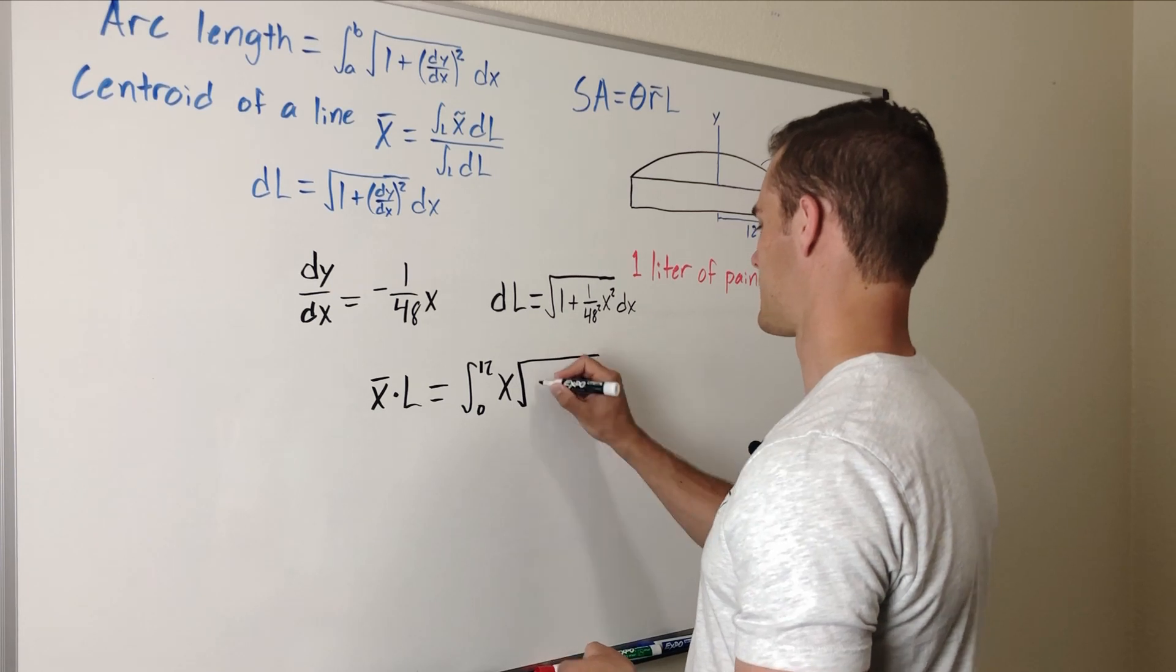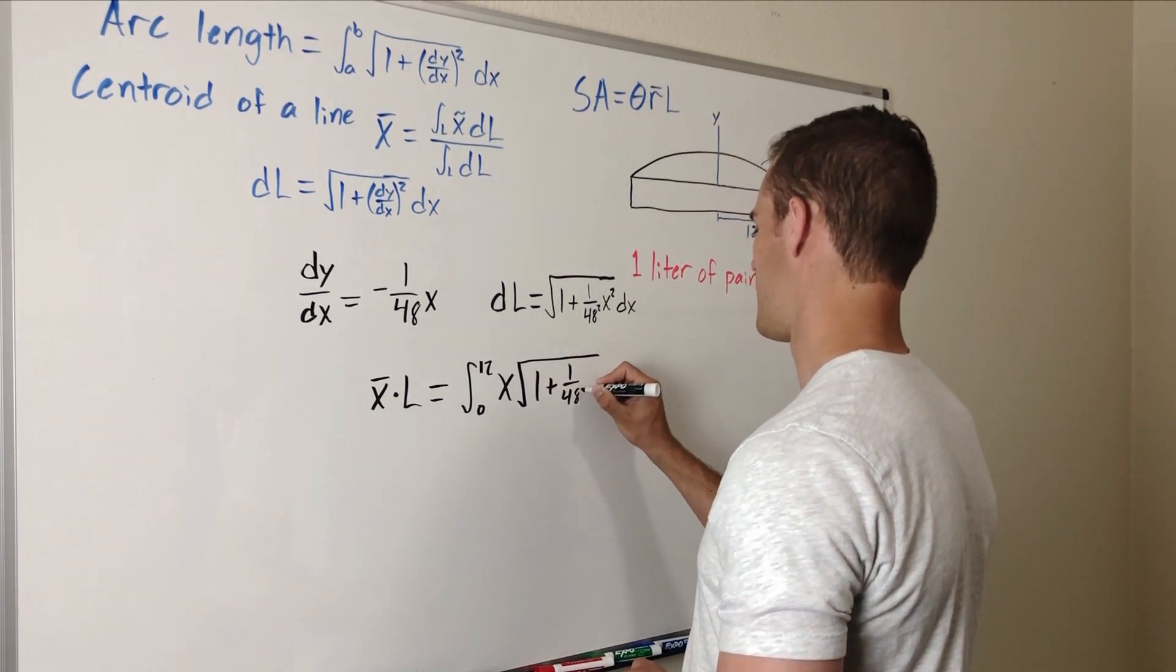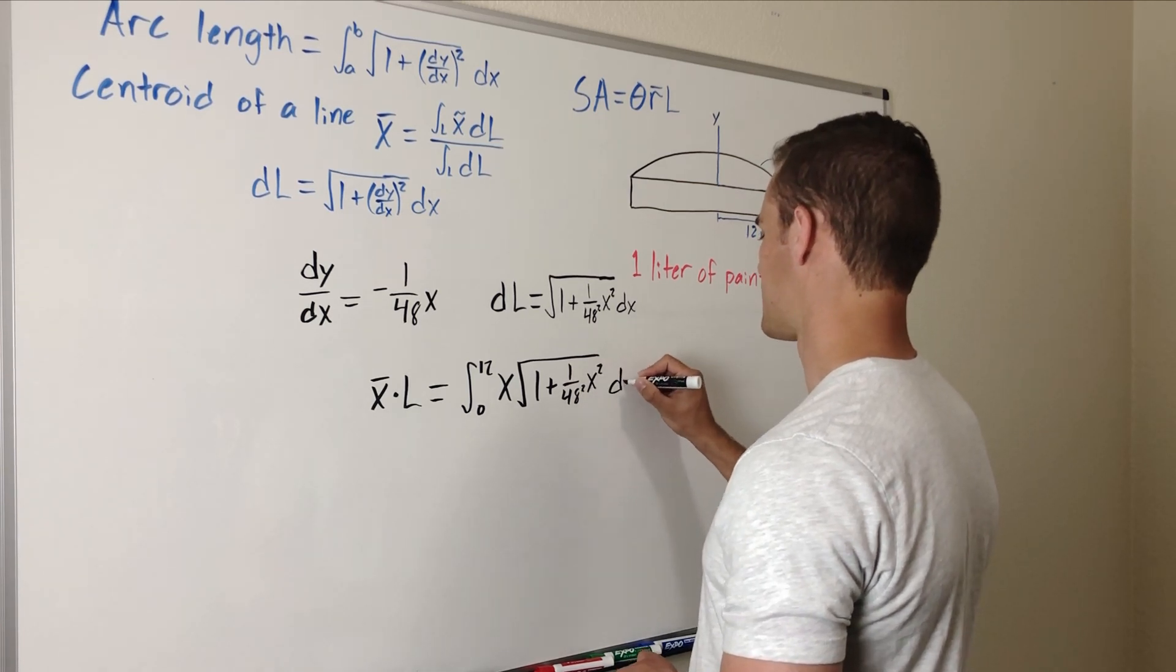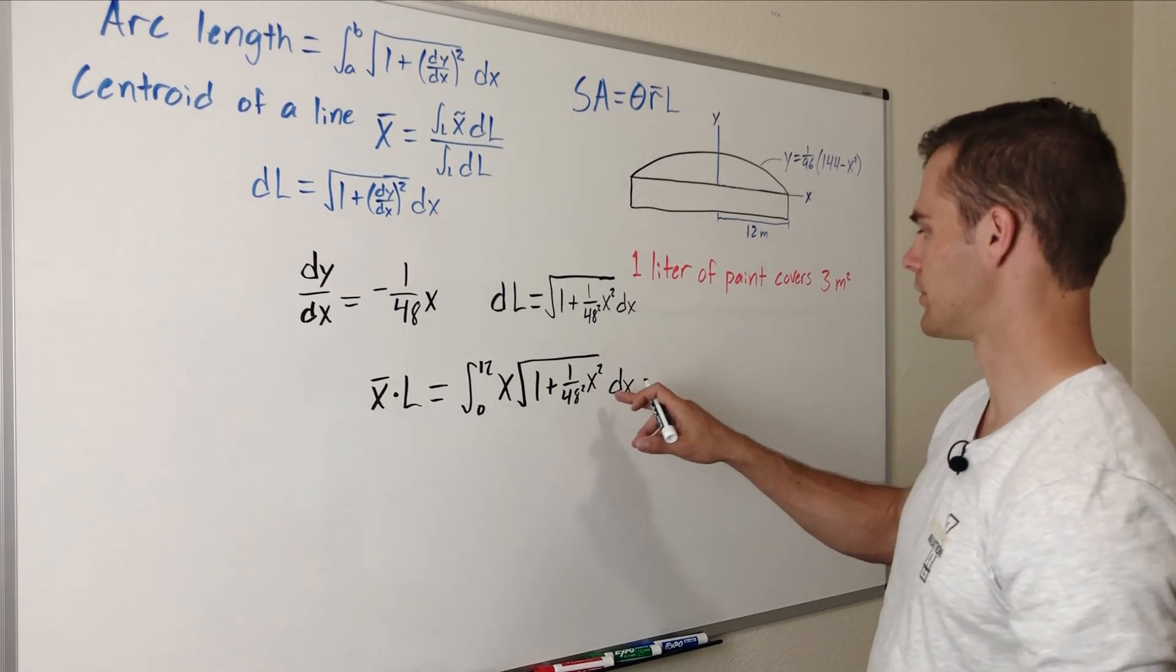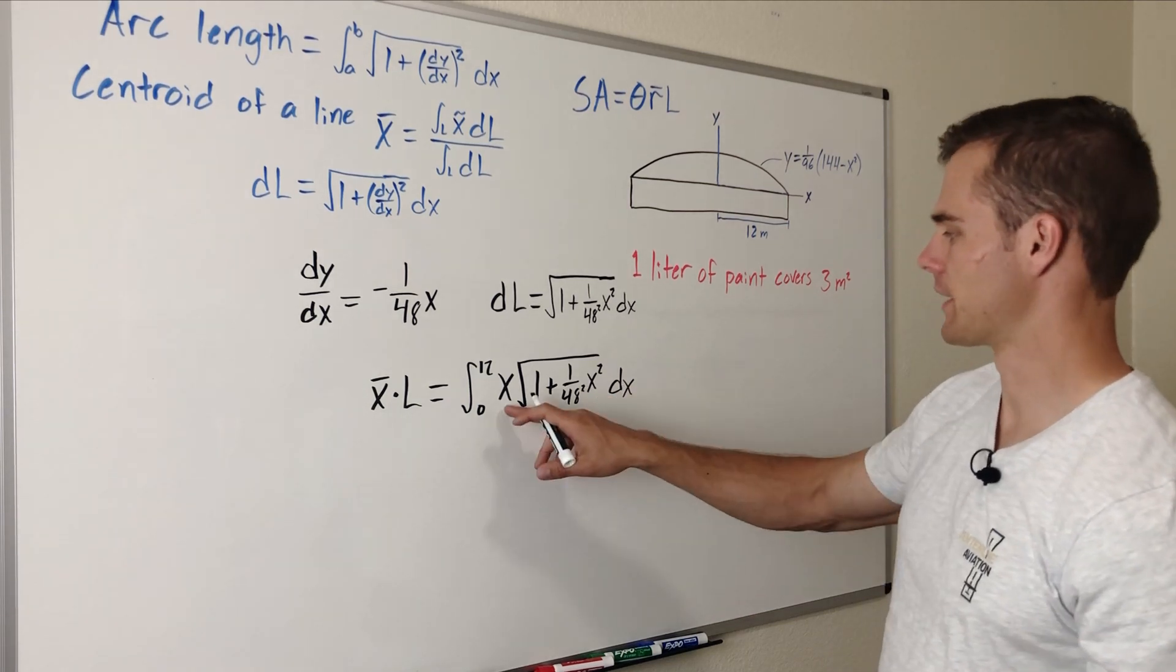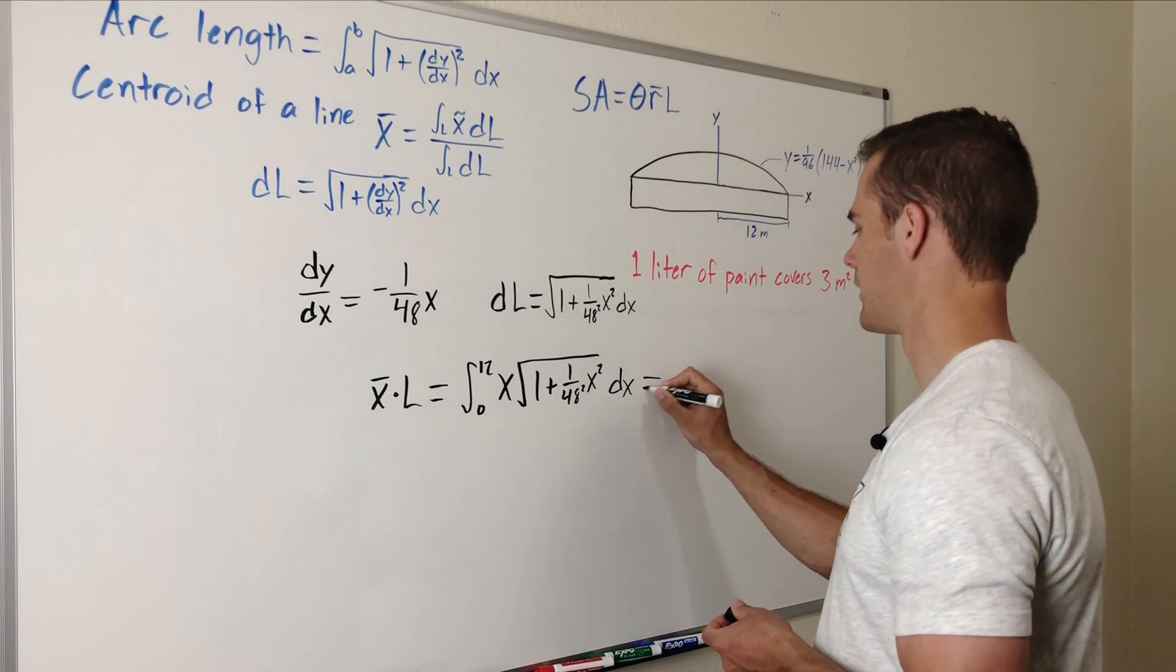So that is 1 plus 1 over 48 squared multiplied by x squared dx. Now if I was to do this by hand I would use u substitution to substitute for x squared and that would get rid of our x out here but I'm not going to do that in this video.